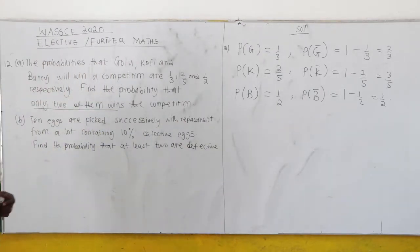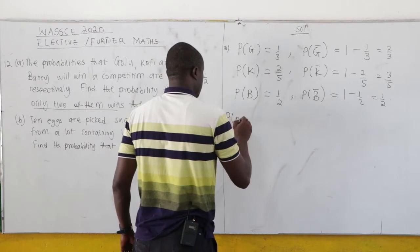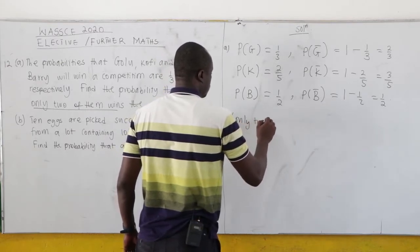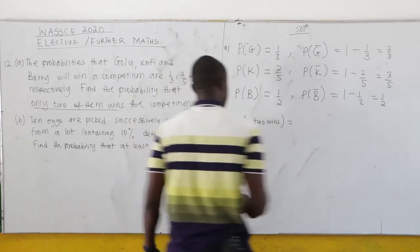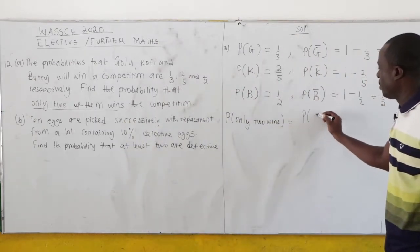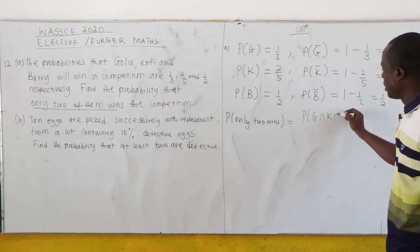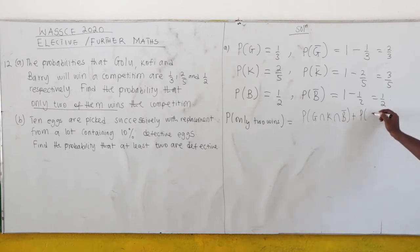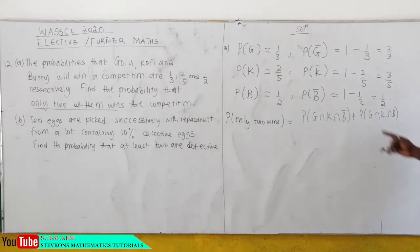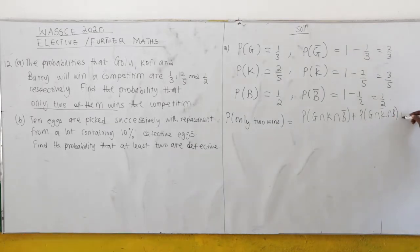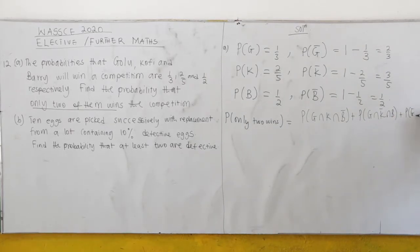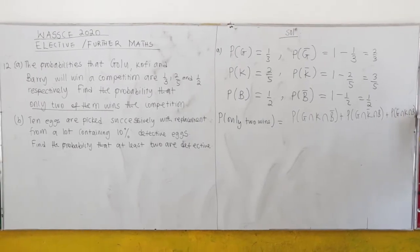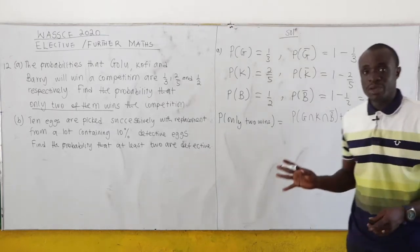Now we find the probability that only 2 of them win the competition. It can either be: Golu wins and Kofi wins but Barry does not win; or Golu wins, Kofi does not win, but Barry wins; or Golu does not win, but Kofi wins and Barry wins. So only 2 win the race. These are independent events.